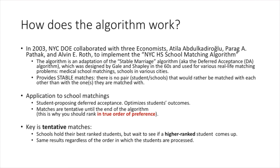The application to school matching used in New York City is a student-proposing version of the algorithm, meaning students make the first choices, and that's why the algorithm optimizes the student's outcome. If the city had decided to use a school-proposing algorithm, it would still have the stable property and create assignments, but it would optimize the output for the schools, not for the students. So it's better for students' outcomes to use a student-proposing version.